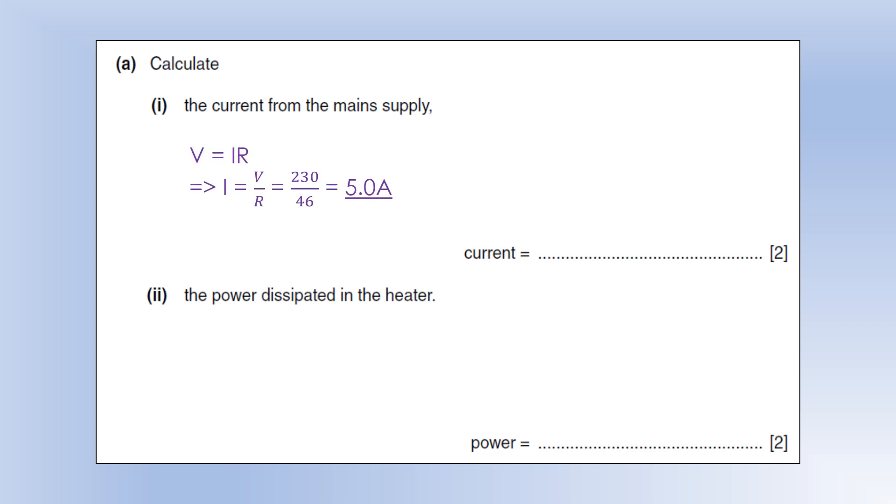We know the potential difference across R1 is 230, we know its resistance is 46, so we can just use V equals IR to calculate the current.